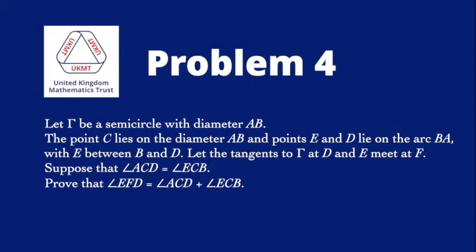Problem 4. Let gamma be a semicircle with diameter AB. The point C lies on the diameter AB, and points E and D lie on the arc BA, with E between B and D.